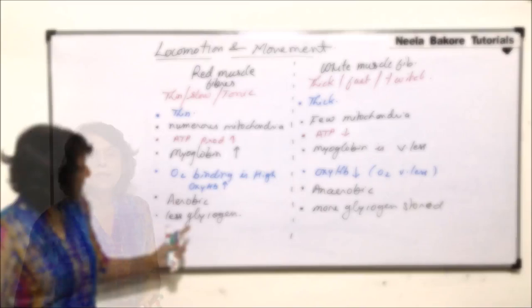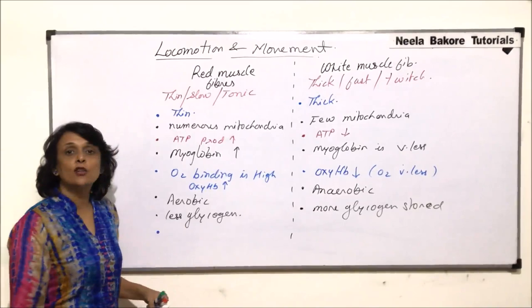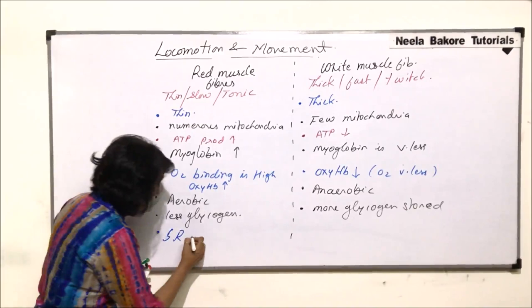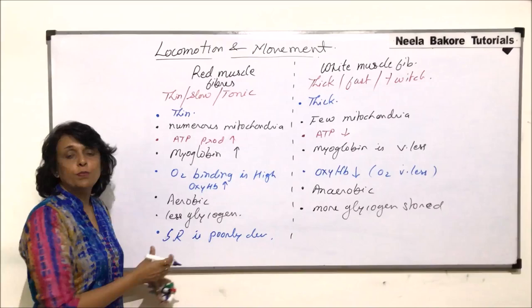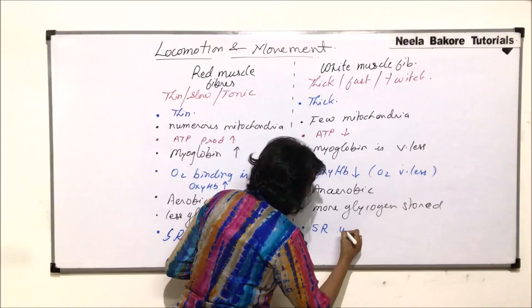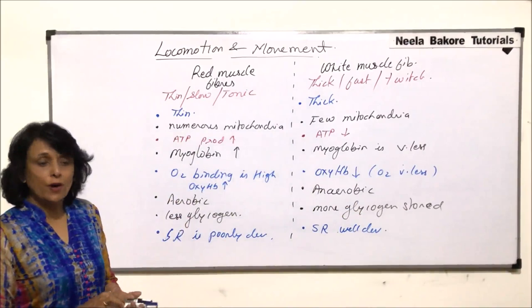The next point of comparison is the sarcoplasmic reticulum. In red muscle fibers, the sarcoplasmic reticulum — the structure where calcium is stored — is poorly developed, meaning calcium storage is also poor. Whereas in white muscle fibers, the sarcoplasmic reticulum is well developed.